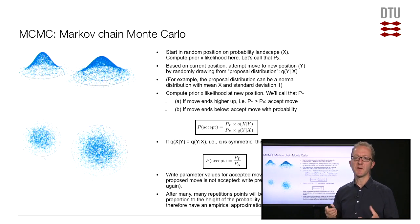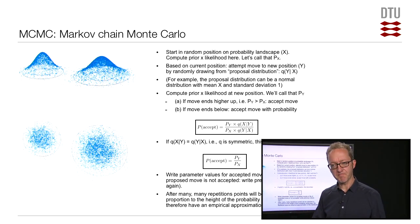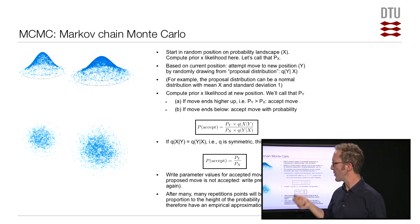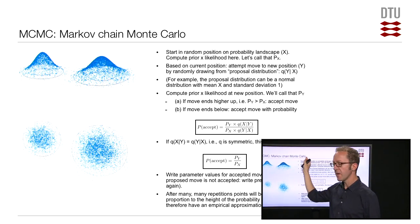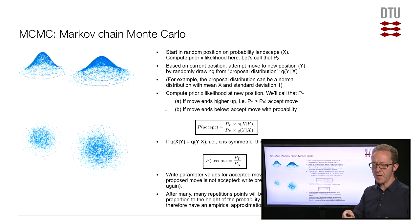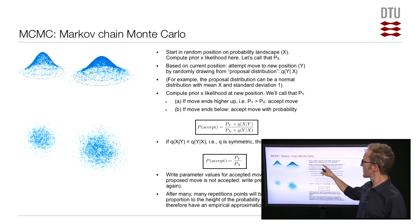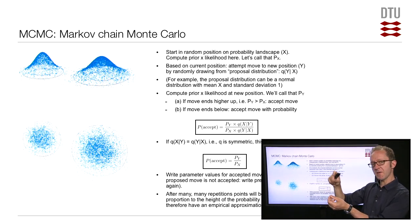We can use this as a way of empirically approximating the posterior distribution without actually computing the denominator. This is done according to the Metropolis-Hastings algorithm. Our starting point is a parameter space, and for any given point in it, you know the prior and can compute the likelihood. Let's say we start in some random position x in this parameter space, and compute prior times likelihood — call that px.